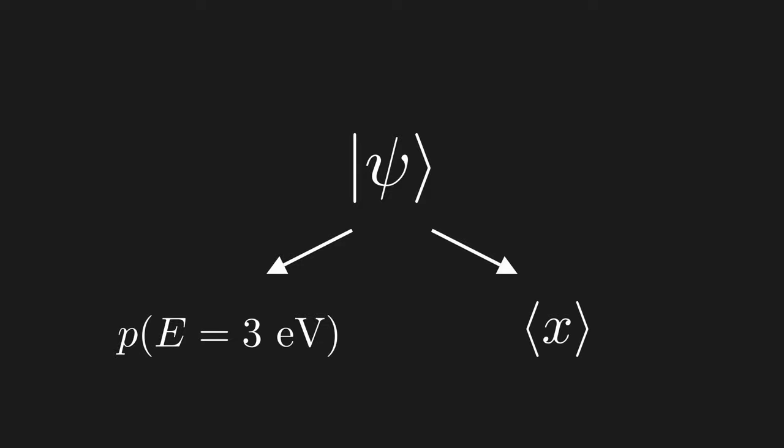Or say we want the average position we expect in this state. To get these, we have to go from quantum state to number. And so we know that a linear functional is involved here somewhere. So hopefully you're convinced that we have to use linear functionals in our quantum theory.